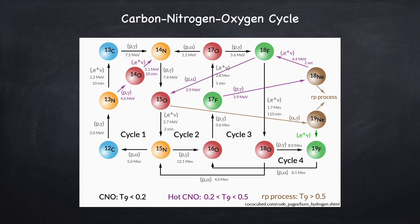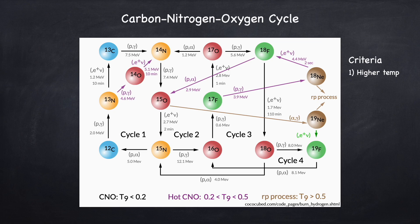Before we get into the details of this diagram, let's first discuss the conditions for the CNO cycle to take place. The first condition is the CNO cycle requires a slightly higher temperature than the proton-proton chain. So colder stars will burn on the proton-proton chain, and hotter stars will burn on the CNO cycle. When I say one or the other, both the proton-proton chain and the CNO cycle will happen simultaneously. But if we say it's burning on the CNO cycle, it just means the CNO cycle is the dominant form of energy output. Similarly, if we say it's burning on the proton-proton chain, the proton-proton chain is putting out more energy than the CNO cycle.